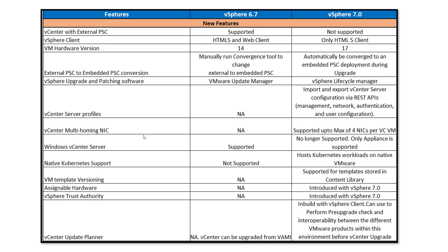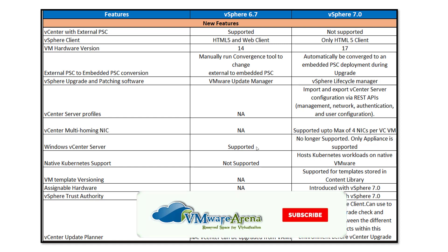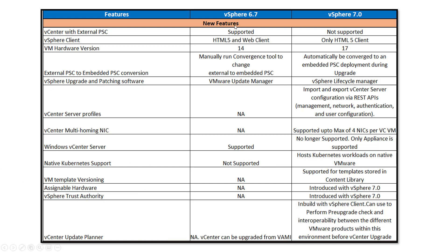Next is vCenter multi-homing NIC support — multiple network adapter support for vCenter Server. It was not supported in 6.7, but with 7.0 up to four network adapters per vCenter Server are supported. This was introduced to support vCenter Server HA, which provides high availability by deploying an active node, passive node, and witness. If the host where vCenter is running goes down, the passive node automatically fails over.